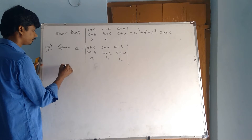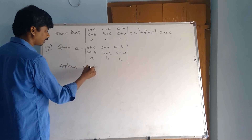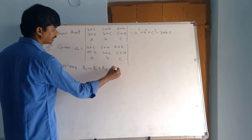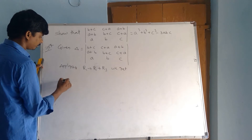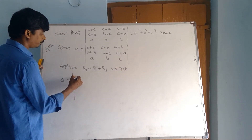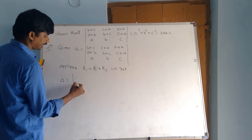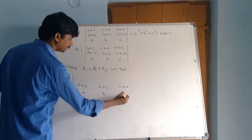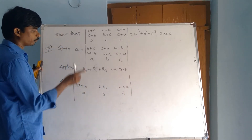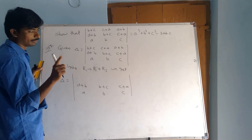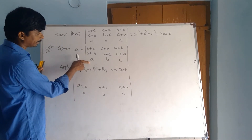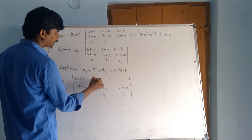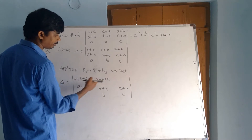Solution. Given delta equal to the determinant with rows (B+C, C+A, A+B), (A+B, B+C, C+A), (A, B, C). Now applying R1 → R1 + R3. Don't change R2 and R3, only change R1. R1 + R3 gives (A+B+C, A+B+C, C+A).